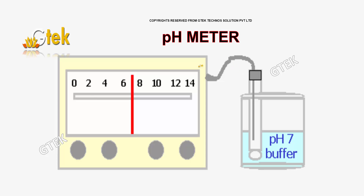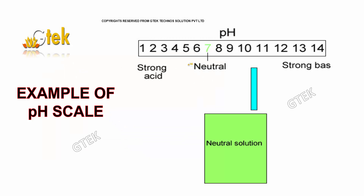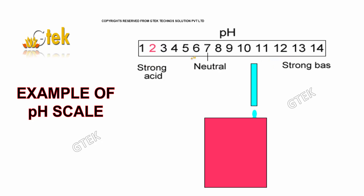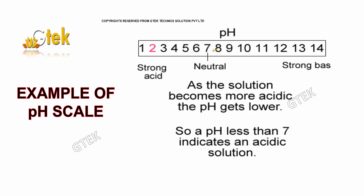This is the general representation of a pH meter. This is an example of a pH scale, where the scale ranges from 1 to 14. 1 to 6 is acidic, 8 to 14 is basic, and 7 is neutral.